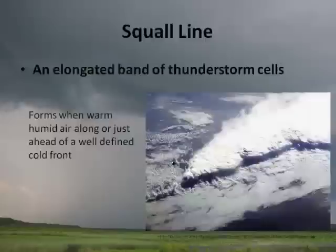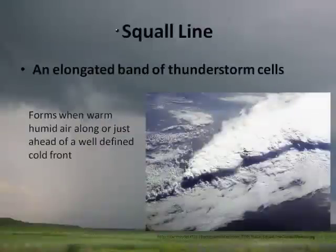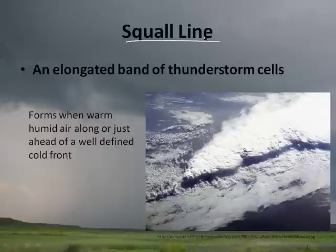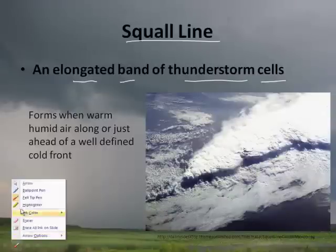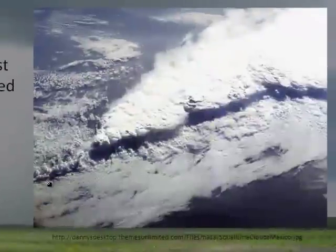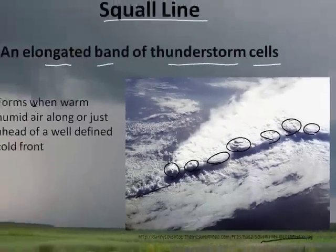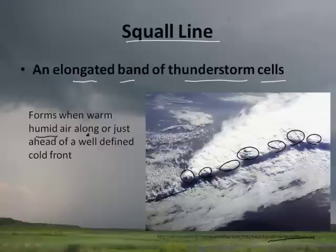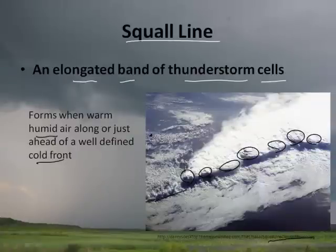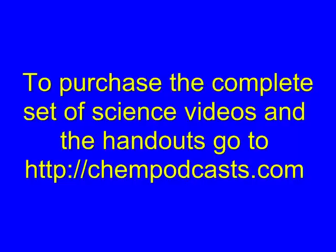Hopefully that was instructional. Now this leads us to more discussion about thunderstorms — specifically more types of thunderstorms. The first is called a squall line. Squall lines are really quite fascinating: it's an elongated band of thunderstorm cells. We can see in the picture — a view from space somewhere in Mexico — a whole line of thunderstorms all in a row. This is called a squall line, and it forms when warm, humid air meets along or just ahead of a well-defined cold front.